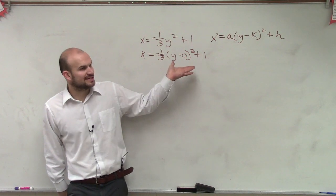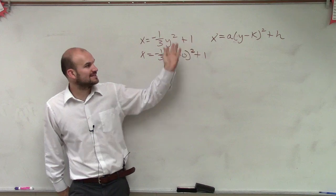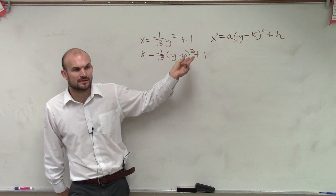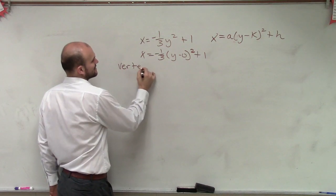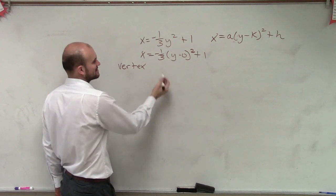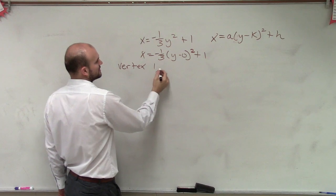But I wrote it like this so you guys can see that, oh, now I can see my k is equal to 0, right? So that's going to be very helpful. So now, when I want to find my vertex, I know now my vertex is going to be 1 comma 0.